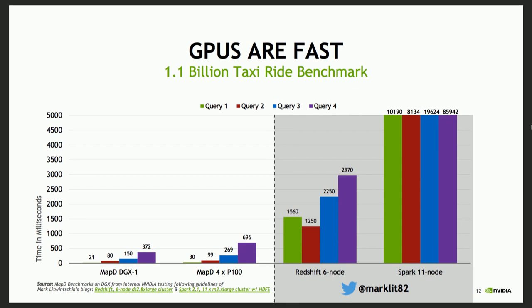This is query performance from MapD versus other hardware — Redshift and Spark. What we're seeing is a query that takes minutes — in the case of Query 4, a minute and a half — we're seeing run in sub-second time on four or eight GPUs. This is something that would take six nodes of Redshift still about three seconds to complete Query 4. When we can move these workloads to GPU, with just a smaller footprint, we can just get more done.